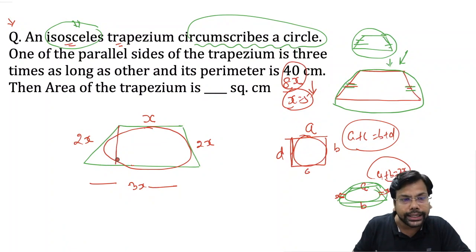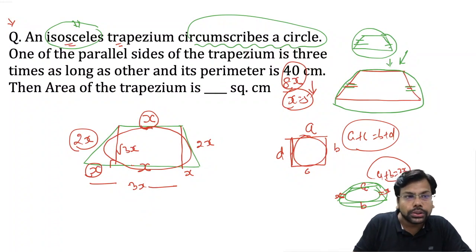How do we find the area? I drop perpendicular to both sides. If this is x, and it's isosceles, then both sides will be divided equally. So here is 2x and this is 2x. By Pythagoras, this will be root 3x.